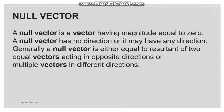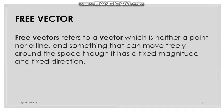A null vector means the magnitude is zero. We obtain a null vector when two vectors have the same magnitude but opposite directions — for example, 5 meters and minus 5 meters. Their resultant is zero, so the resulting vector is a null vector with magnitude zero.